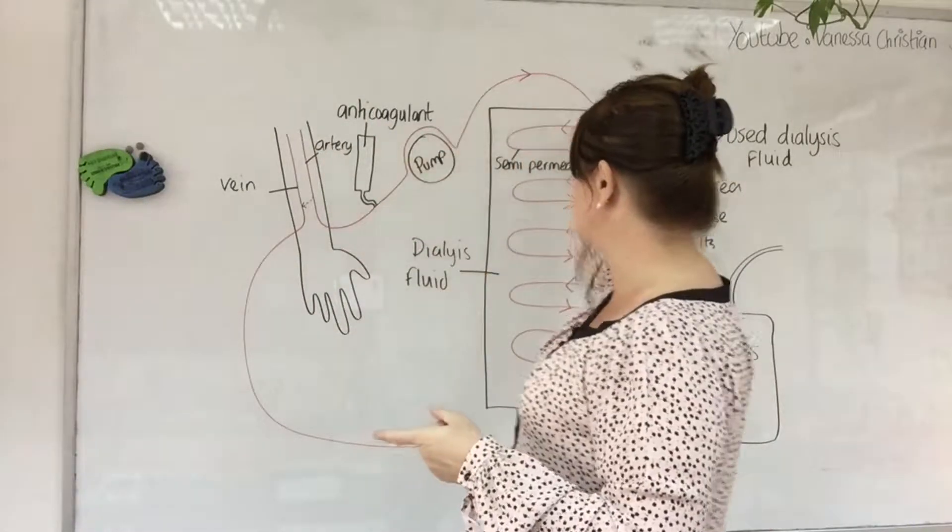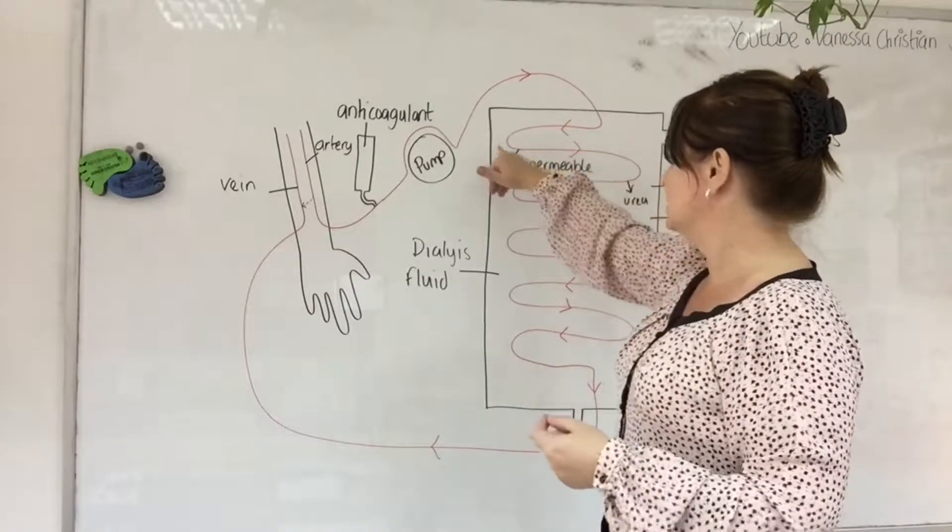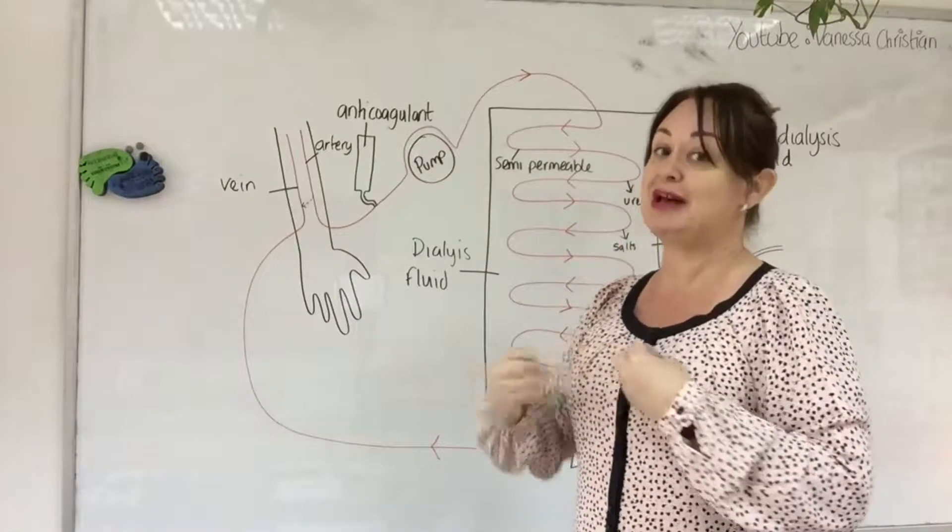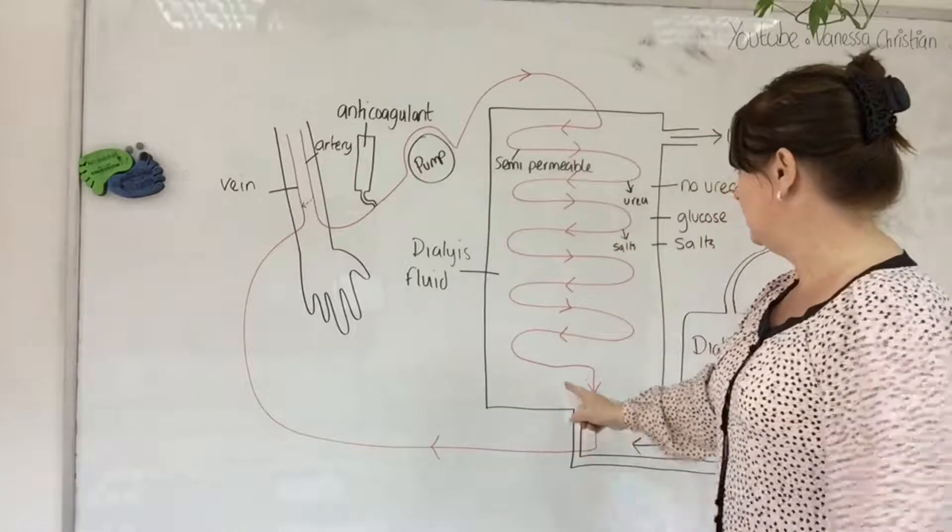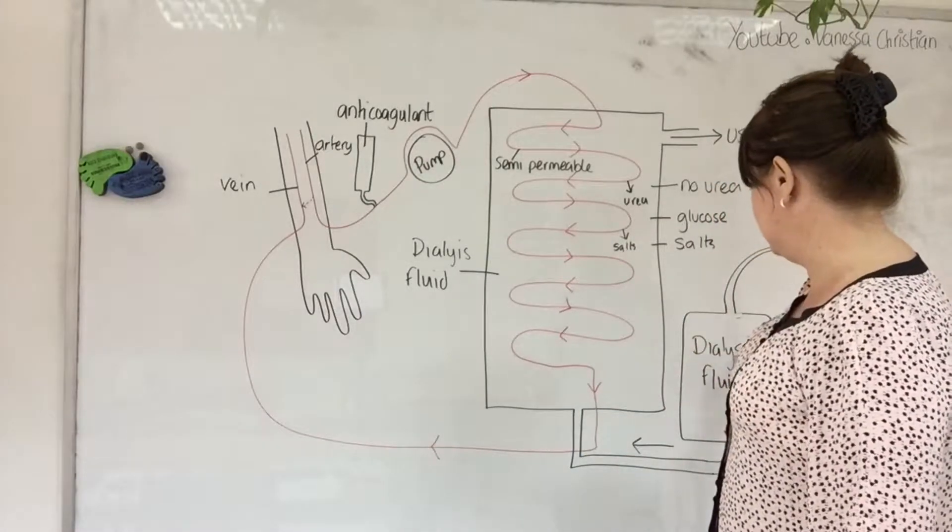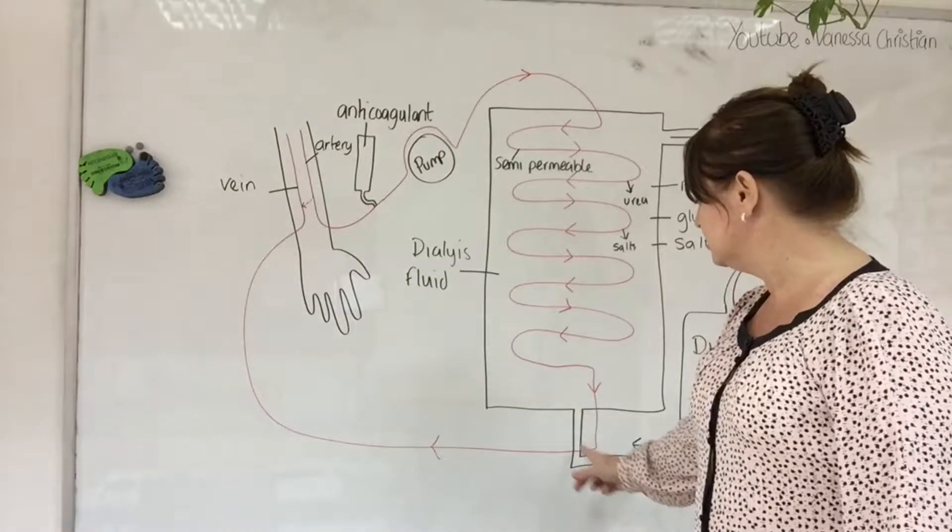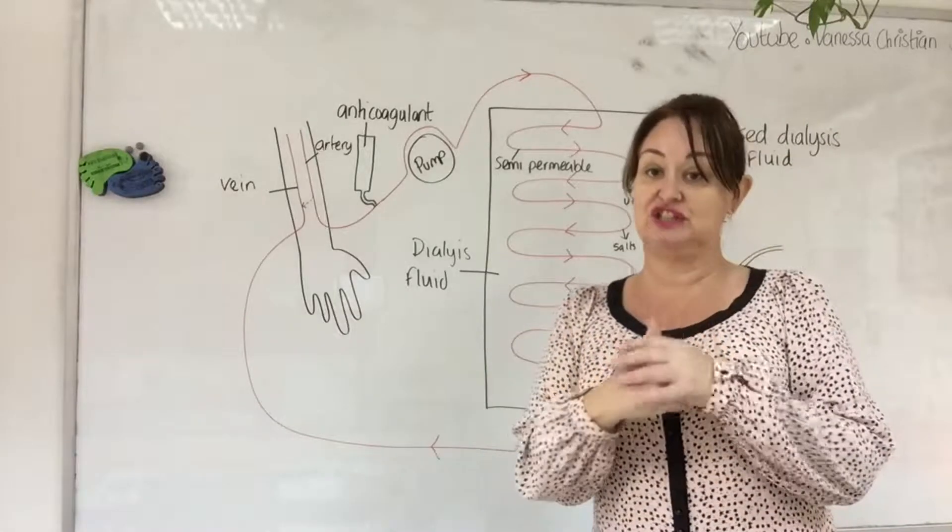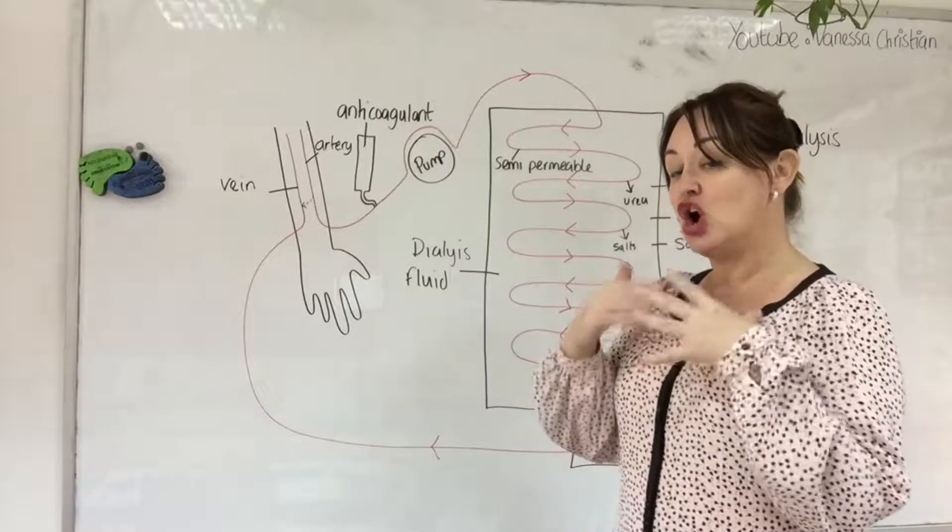The blood is pumped through the machine. We've got a large surface area here and the tubing is semi-permeable, so it's going to allow small substances to pass through it and keep the big substances inside. Running in a counter current manner to that, we've got the dialysis fluid and we've talked about this before.